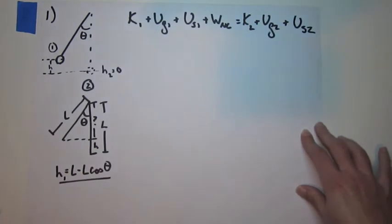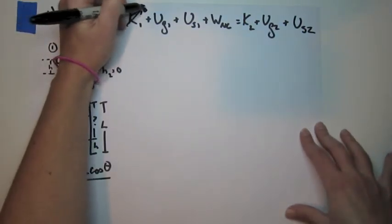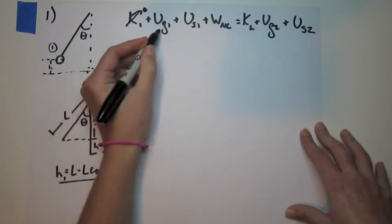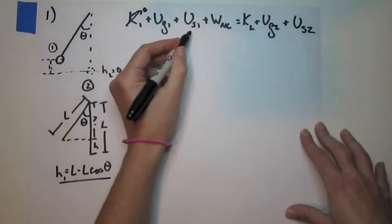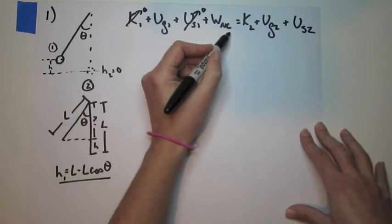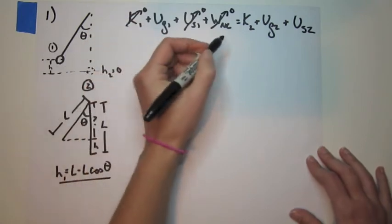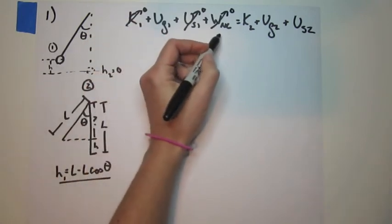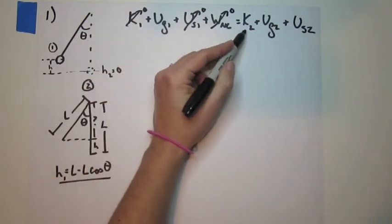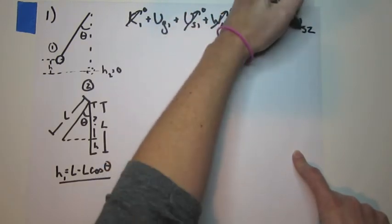So that's the whole thing. And let's cross out anything that's zero. At time one, it's not moving, and so there's no velocity. At time one, it is a height above zero. At time one, there's no spring. Is there any work done by non-conservative force such as friction? No, there's not. There's only the weight and the tension, which is perpendicular. Is it moving at time two? Yes. Is there a height at time two? No. Is there a spring at time two? No.